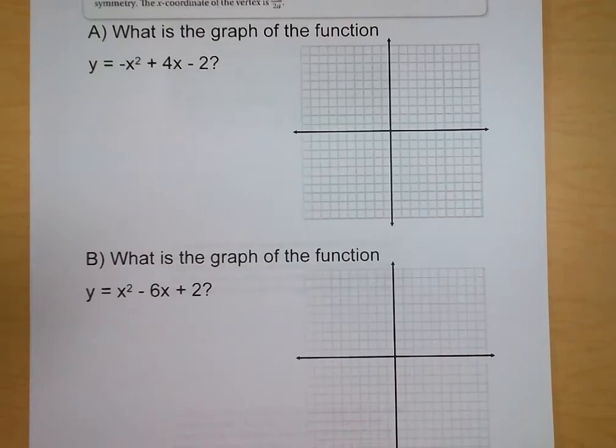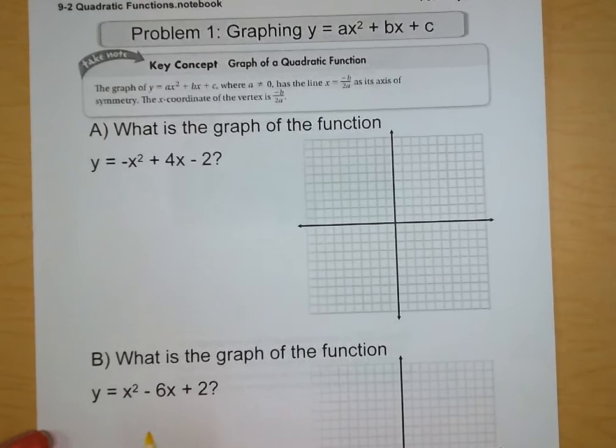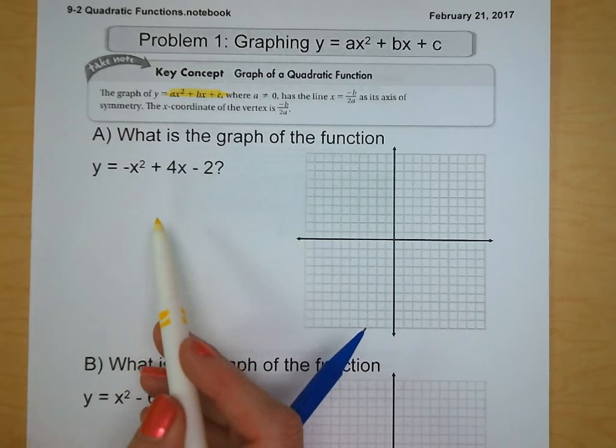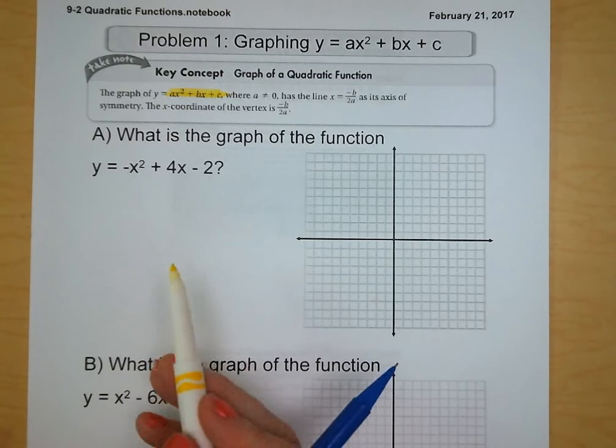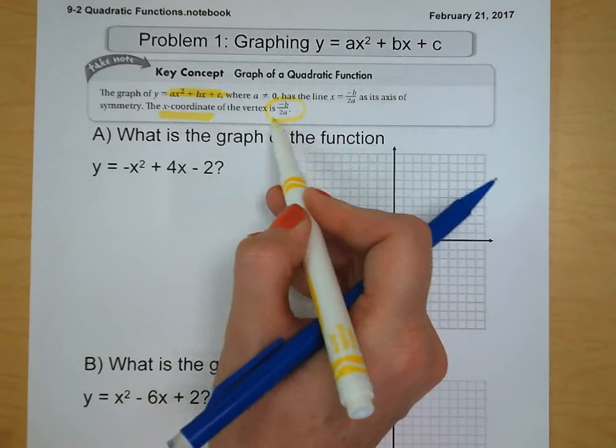These are going to be a little bit more complicated than yesterday. The first thing we're going to do is look at how to graph these equations. We have a pretty important key concept here, which is how to find the vertex of a quadratic equation. To find the x-coordinate, we take the opposite of b and divide it by 2a.